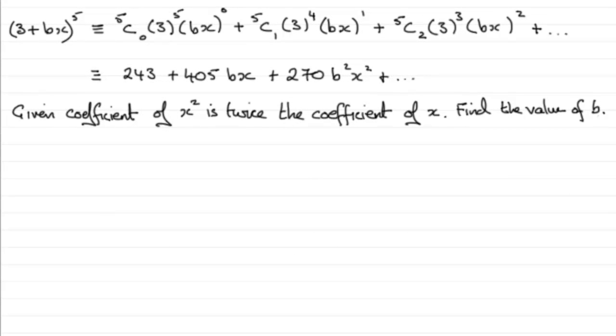Now, in the first part, we worked out the binomial expansion for 3 plus bx to the power 5, and we've got this expression here. Now we're told that, given that the coefficient of x squared is twice the coefficient of x, find the value of b.